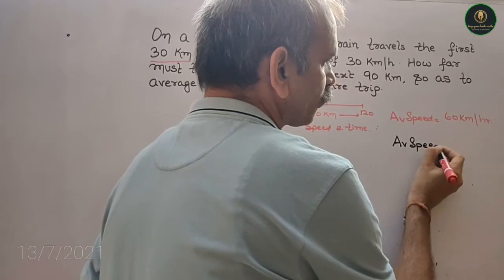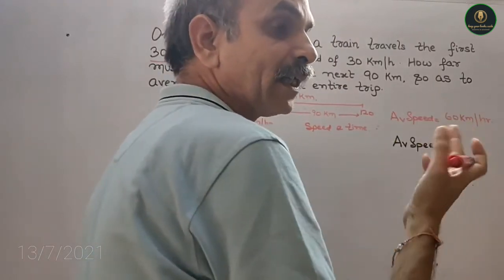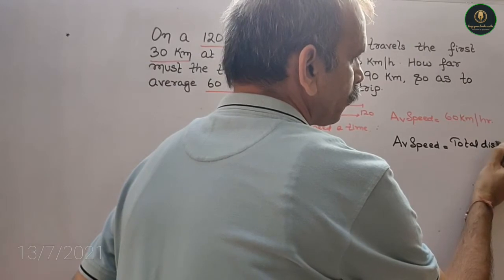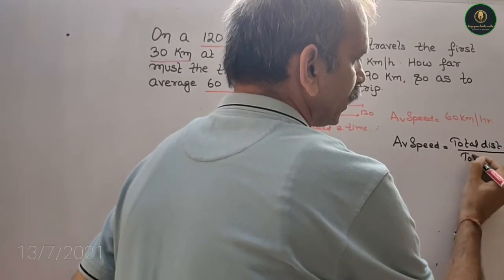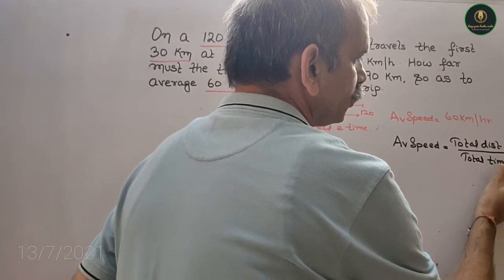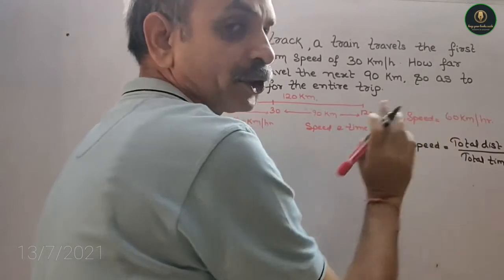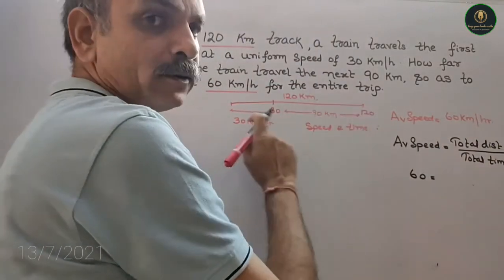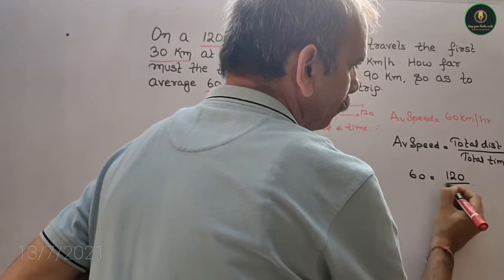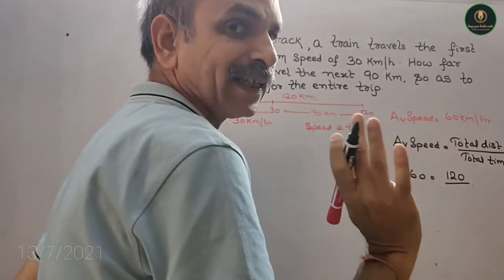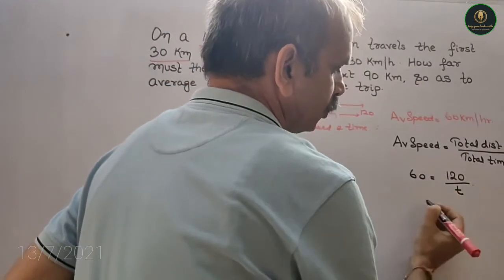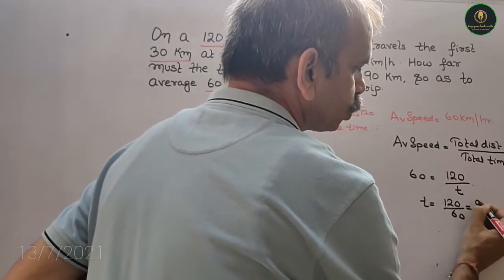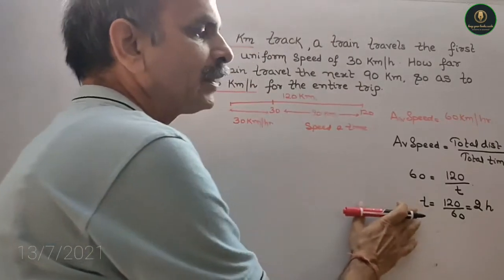Average speed is equal to total distance by total time. So average speed they have given you is 60. Put that value: 60 equals 120 by total time T. So T equals 120 by 60, that is equal to 2 hours — total time is 2 hours.